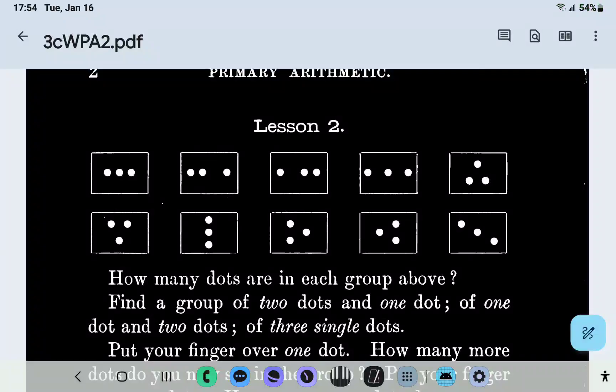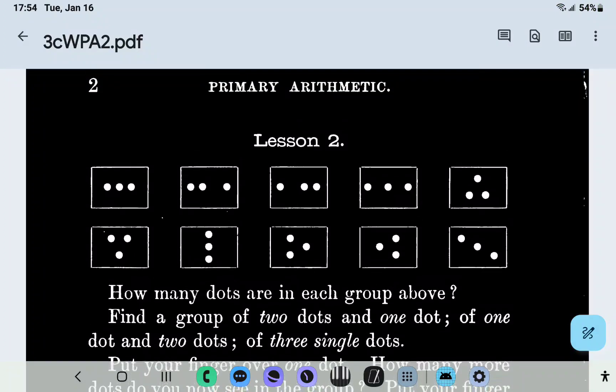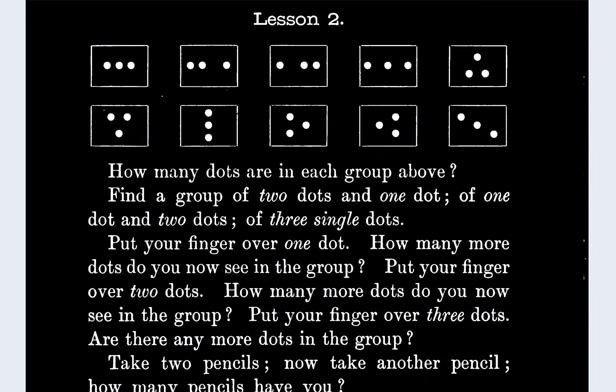Hello, welcome back to school. This is lesson two, page two of my homework. I don't know what these number things are, but okay. We gotta read the words and then write out the answers. How many dots are in each group above? Looks like there's only three dots in each group above. I gotta mark that down in my book.